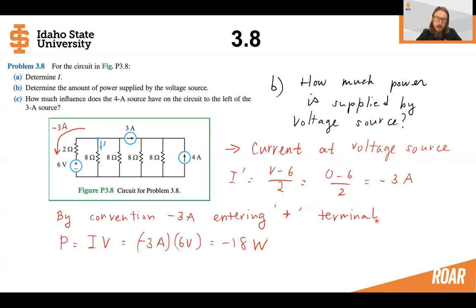So by convention, we have a minus three amp entering the plus terminal. So we can say that the power is equal to the current entering the plus terminal multiplied by the voltage. So minus three amps multiplied by six volts is equal to minus 18 watts. Since the power is negative, that means the battery is supplying that power to the rest of the circuit.